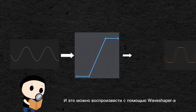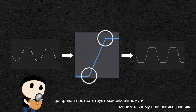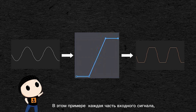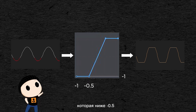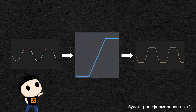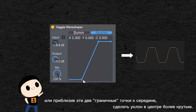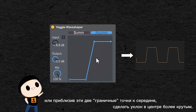This can be replicated with a Waveshaper with this kind of curve, with hard corners where the curve meets the maximal and minimal values of the graph. In this example, every part of the incoming signal that is below minus 0.5 will be flattened at minus 1, and every part that is above 0.5 will be flattened at 1. You can then make the effect even more drastic by boosting the amplitude of the incoming signal, or by bringing these two points closer to the middle, making the slope in the center steeper.